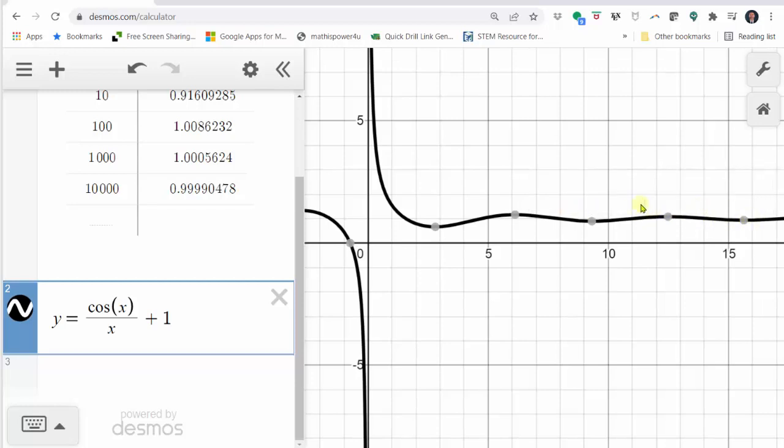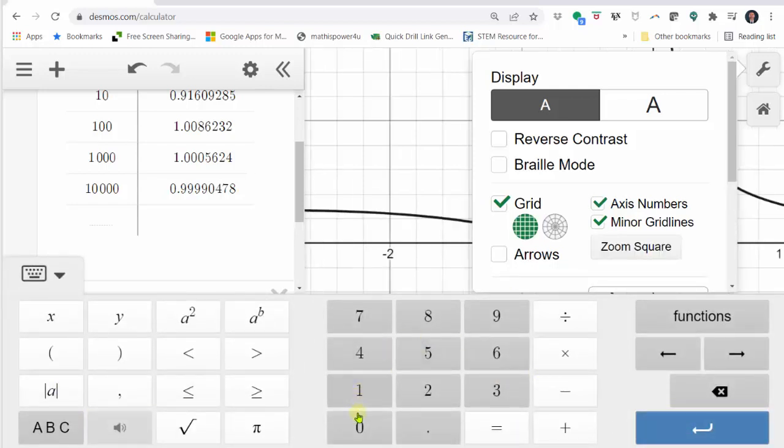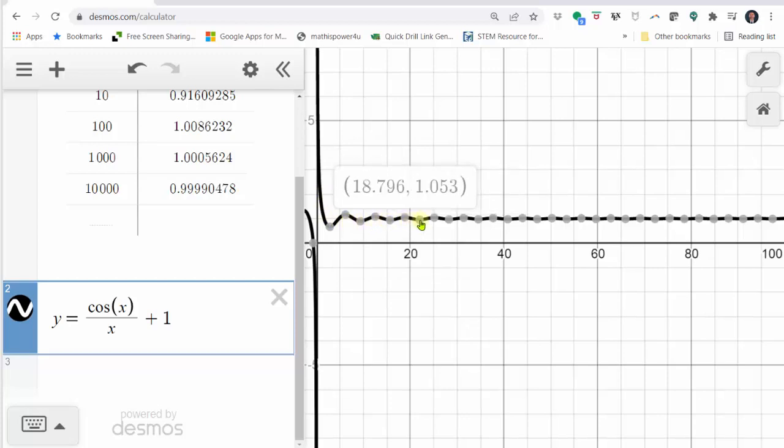Again, if we wanted to, we can change the window by clicking on the wrench. For example, we can change the x max to let's say 100 to view more of the function to the right. Once again, we can see as x approaches infinity or move to the right, the function values are approaching positive one, verifying the limit.